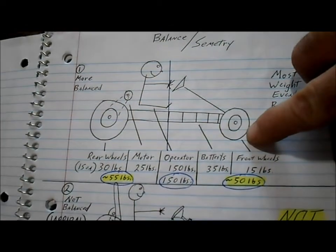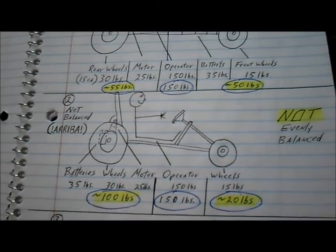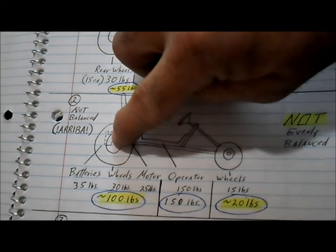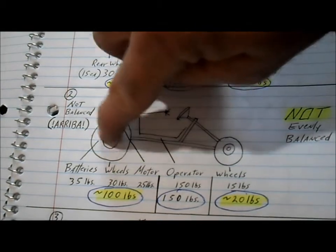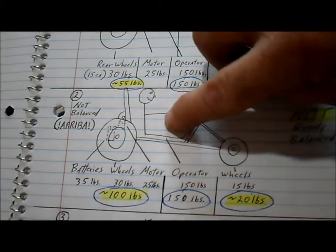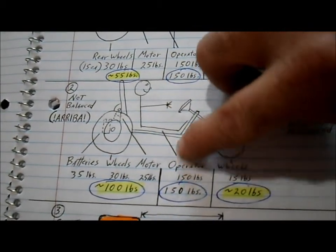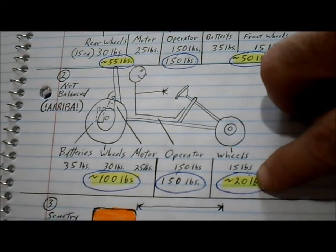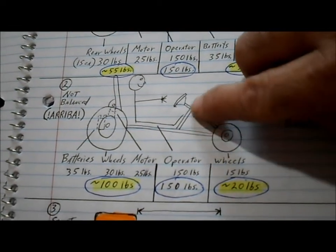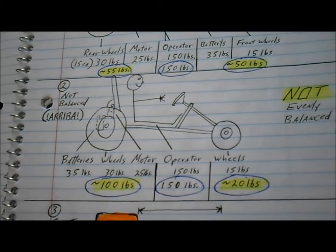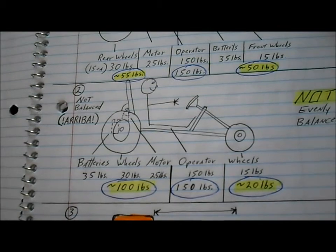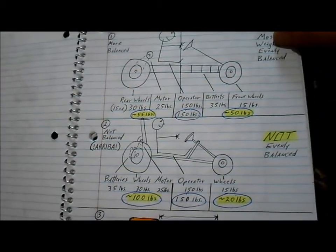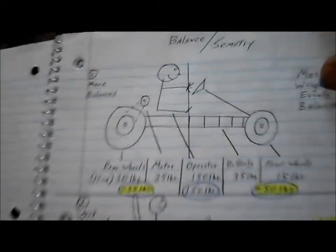As an example, this is how the Ariba cart is set up. It has the motor and the batteries in the back, so you got over 100 pounds just in the back behind the operator. The operator is our 150 pounds, then the front you've only got like 20 or 30 pounds of whatever's left of the frame and front wheels. So this one, when you get on it, the front wheels lift up a bit so it's not balanced too well.